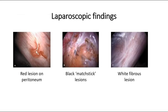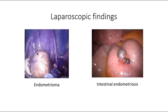These pictures show some of the possible laparoscopic findings. The first picture shows red lesions on the peritoneum. The second picture shows black powder-burn lesions, which can be seen over the ovaries, serosa, or peritoneum. The third picture shows white fibrous lesions. These are the laparoscopic findings of endometriosis. We might also be able to see endometrioma and intestinal endometriosis.